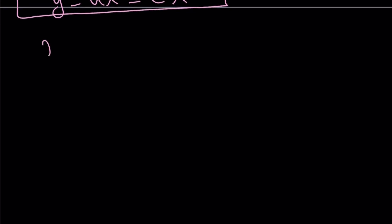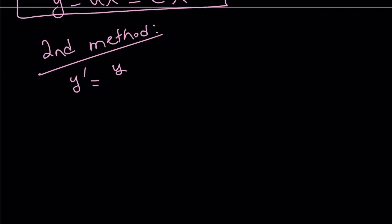My second method involves something very different. With the second method, I'm going to first cross multiply — I don't want x or y to be zero. Cross multiplying gives us y equals y prime times x. Since I have an equation in y prime, I'm going to differentiate both sides of this equation, assuming y is differentiable.